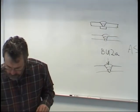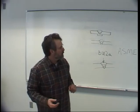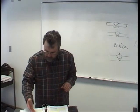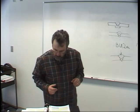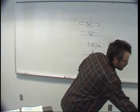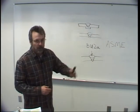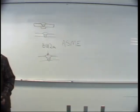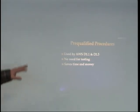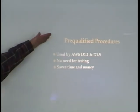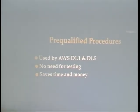You can read about that on page 521. Just about the entire first column discusses the three different types of welding procedures. Pre-qualified procedures are used by AWS D1.1 and D1.5 — D1.1 is the structural welding code for building construction, and D1.5 is their bridge building code. There's no need for testing with pre-qualified procedures, which saves time and money.